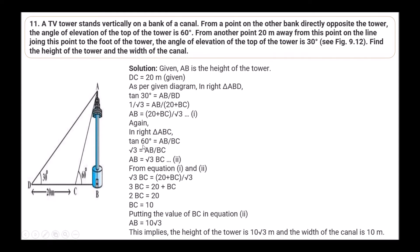In right triangle ABC: tan 60° = AB/BC, so √3 = AB/BC, giving AB = √3·BC (equation 2). From equations 1 and 2: √3·BC = (20 + BC)/√3, so 3·BC = 20 + BC, giving 2·BC = 20, thus BC = 10. Substituting: AB = 10√3. The height of the tower is 10√3 meters and the width of the canal is 10 meters.